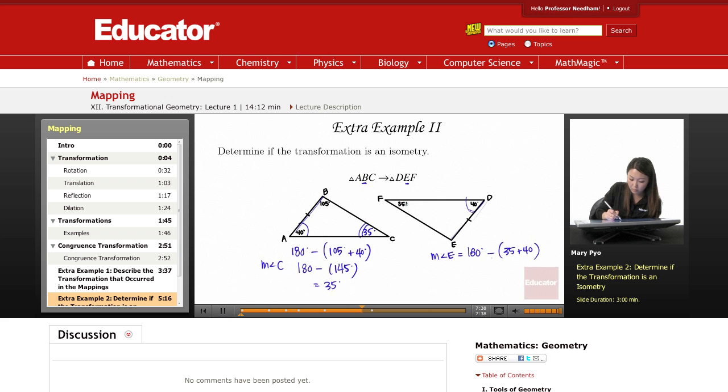So this angle is congruent to this angle, and of course that means that this angle has to be congruent to this angle. So I have angle, side, angle. A pair of angles are congruent, their sides are congruent, and the angles are congruent. So because of this, these two triangles are congruent, and therefore this is an isometry, so it's yes.